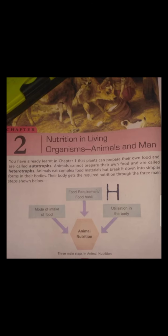As you know, autotrophs can prepare their own food, and heterotrophs depend upon autotrophs directly or indirectly for their food. Animals take food and the food is broken down into smaller particles in their body — this process is known as digestion. Their body gets the required nutrition through three main steps: first is mode of intake of food, second is food requirement, and third is utilization in the body.